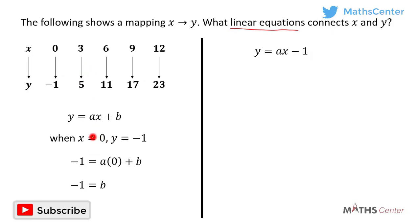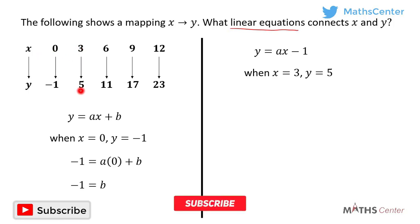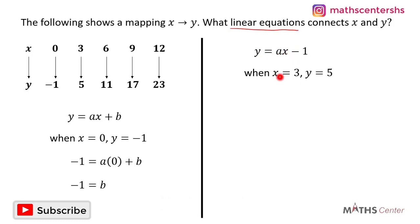Now let's find the value of a. For the second pair, when x is equal to 3, y is equal to 5. You can pick any pair — the third, fourth, or fifth — it doesn't matter. The rule is y is equal to ax minus 1. Substituting x equal to 3 and y equal to 5 gives us 5 is equal to a times 3 minus 1. A times 3 gives 3a, so 5 is equal to 3a minus 1.